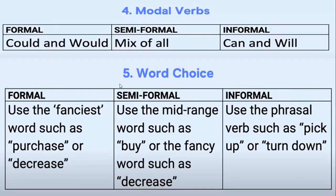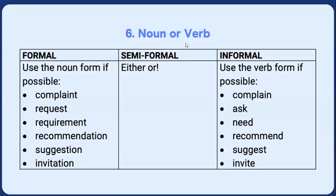The sixth rule is noun versus verb forms. In formal writing, use the noun form if possible — for example, 'complaint' not 'complained' or 'complaining,' and 'request,' 'requirement,' 'recommendation,' 'suggestion,' 'invitation.' In informal writing, use the verb form — 'complain,' 'ask,' 'need,' 'recommend,' 'suggest,' 'invite.' Formal language uses nouns; informal language uses verbs.